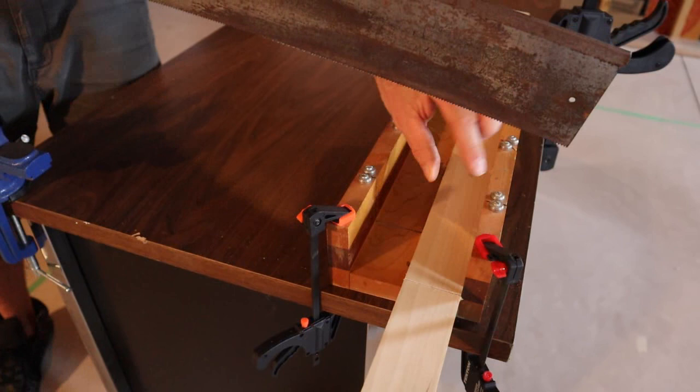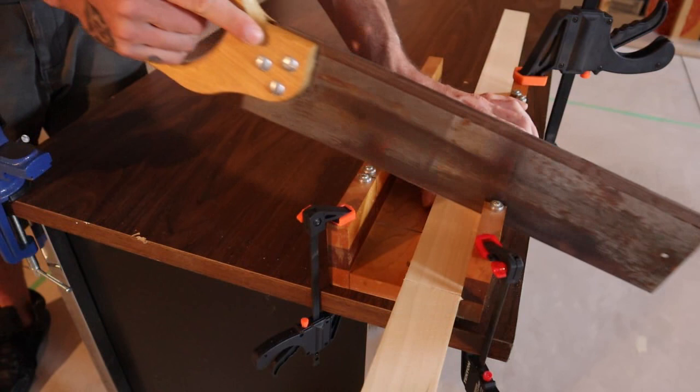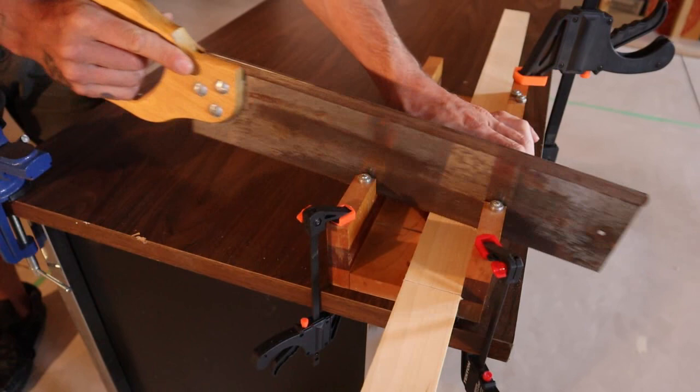When you use a miter box, you want to hold the material against the front of the box, away from you. The reason for that is the type of saw you're using—a back saw or a tenon saw—cuts on the forward stroke, so when you're putting pressure as you're cutting it's going to actually be holding the wood against the front of the box. You kind of start like any saw, just getting your start cut started going backwards.